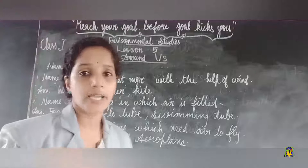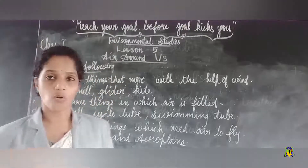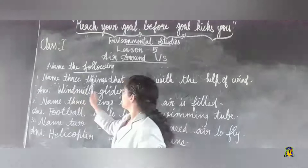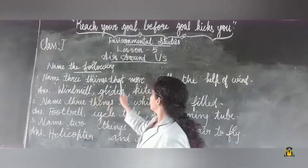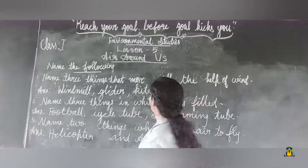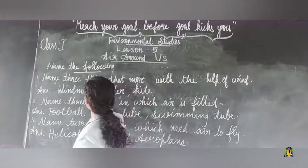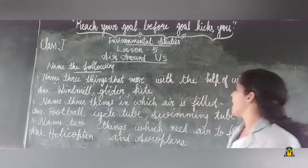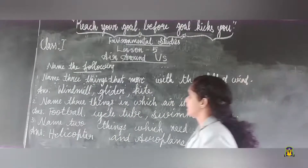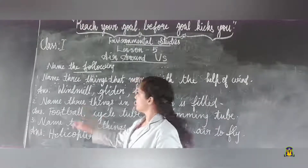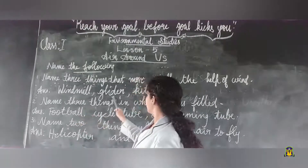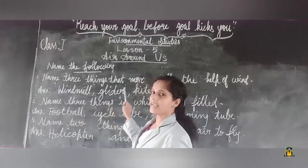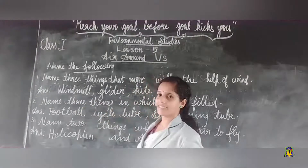Next section — name the following. First question: Name three things that move with the help of wind. Answer: windmill, glider, kite.